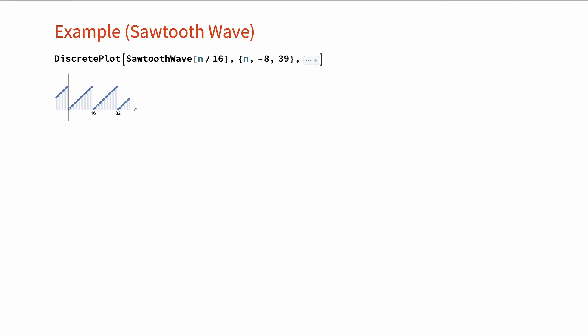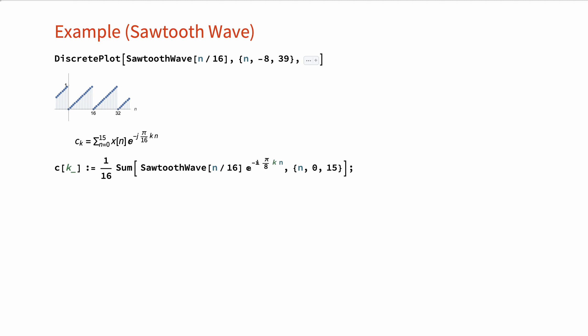As our second example, let's obtain and plot the Fourier series coefficients of the periodic sequence shown here with period N equal to 16. Substituting the sawtooth wave sequence into the Fourier series analysis formula gives us the Fourier series coefficients. We can also plot these values to see how they change for different values of k.